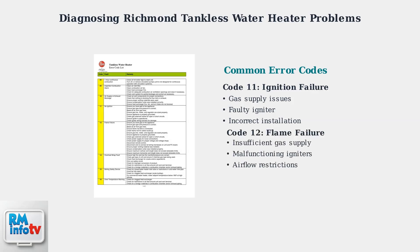Code 12 represents flame failure, meaning the heater attempts to ignite but cannot sustain a flame. This is typically due to insufficient gas supply, malfunctioning igniters, or airflow restrictions.